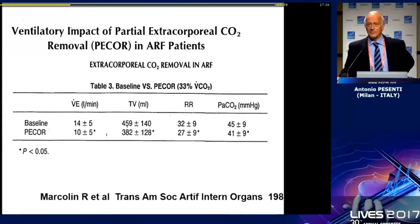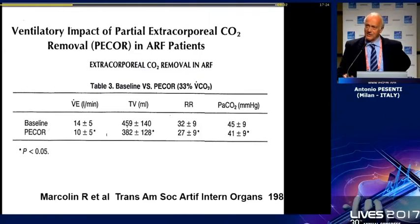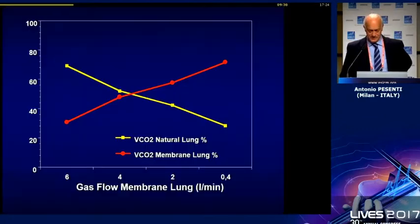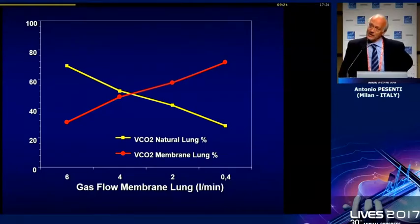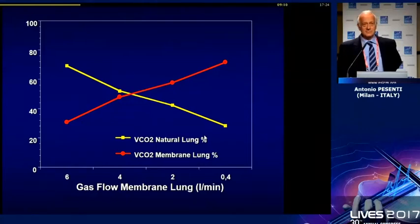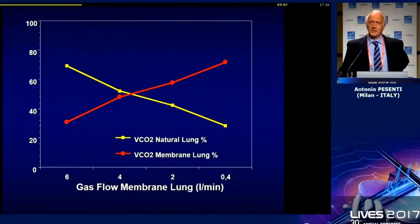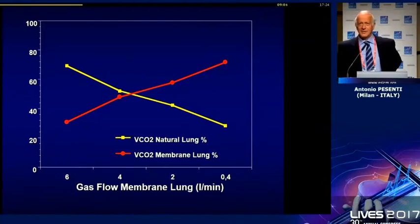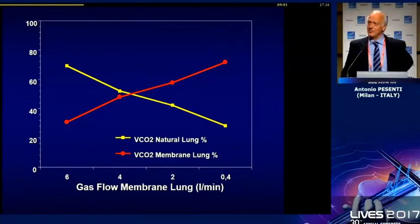If we remove CO2, patients go to an almost normal respiratory rate — from 32 to 27 — and decrease minute ventilation. A single-patient plot shows that when CO2 removal by the membrane lung increases, the CO2 eliminated by the natural lung goes down. So, if you want to control the respiratory drive, you remove more CO2 and the patient becomes more peaceful, decreasing rate and tidal volume.